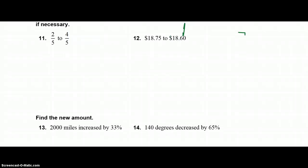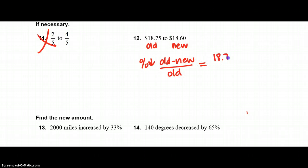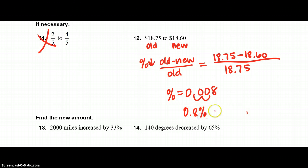Number 11, I had you cross out, do not do number 11. Number 12, you are finding percent increase or percent decrease. This is a decrease. So this is my old number, this is my new number. Percent decrease is old minus new over old, which is 1875 minus 1860 over 1875. And in my calculator, I get a percent equal to 0.008. And that is a decimal, so I have to swoop it to a percent. And my actual percent is 0.8%, and this is a decrease.